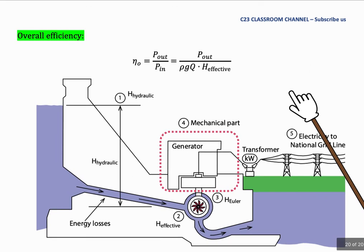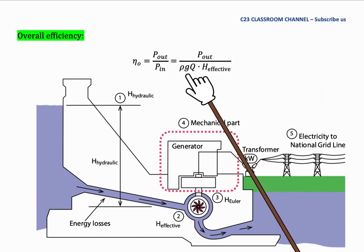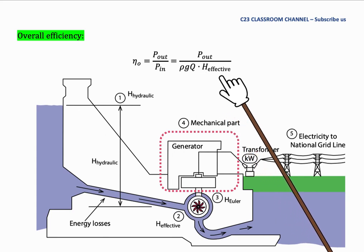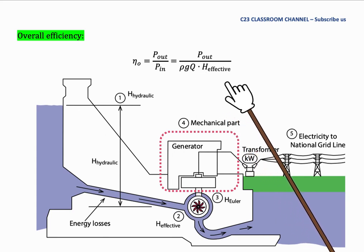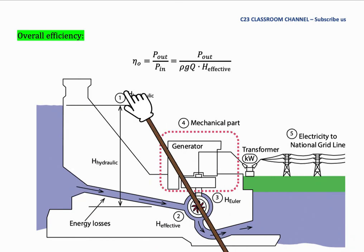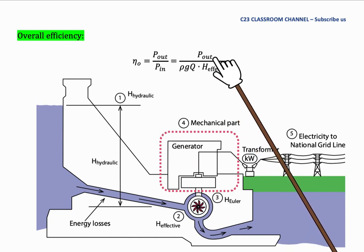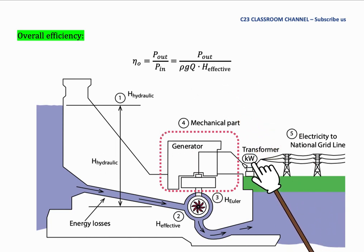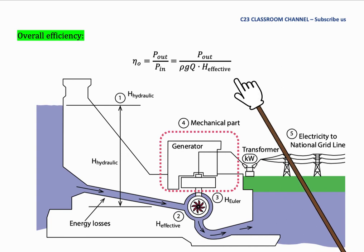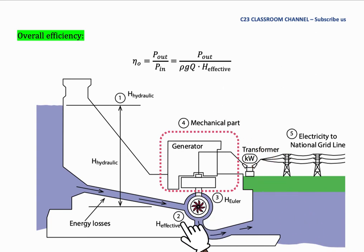Overall efficiency can be defined as power out divided by ρGQ·H_effective. Overall efficiency is the efficiency of the overall system of the Francis turbine. The power out is the power that we could get at the transformer, and the input power is from H_effective.